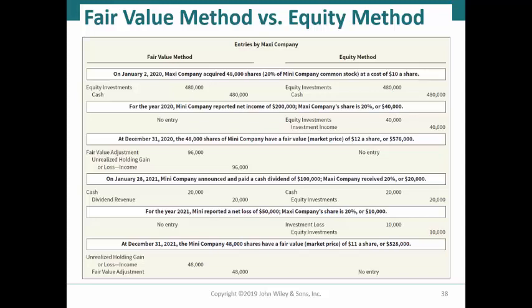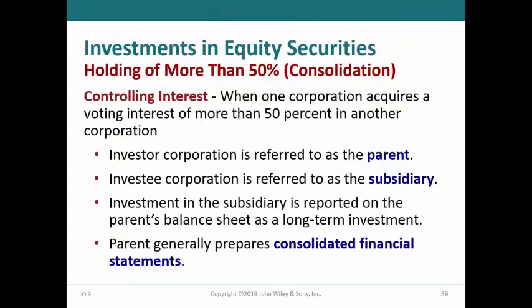When companies own more than 50% of the investee's outstanding common stock, there is a presumption that the investee, now called the subsidiary, is controlled by the investor, now called the parent. Investments in the subsidiary are shown in the long-term investment section of the balance sheet during the year. At the end of the year, consolidated financial statements are prepared that include the net assets of the investee with the parent's net assets. Consolidation accounting is covered in advanced accounting classes. This is the end of the first part of the presentation on Chapter 17, Investments.